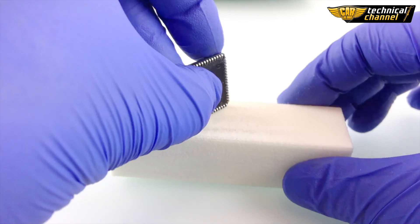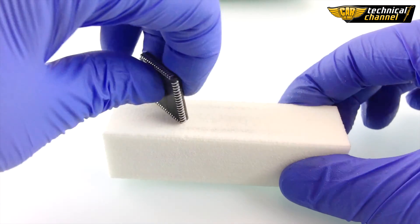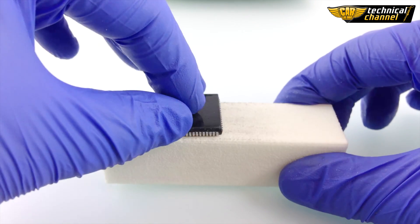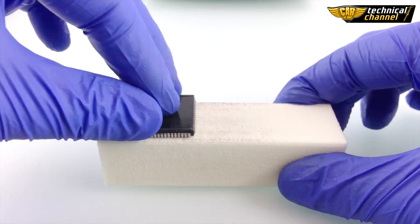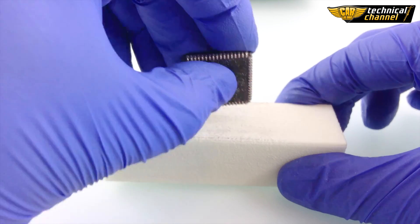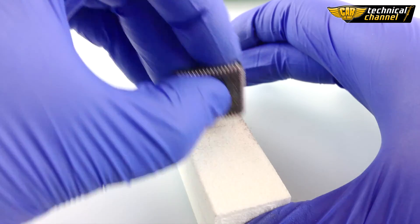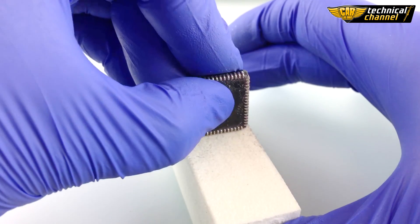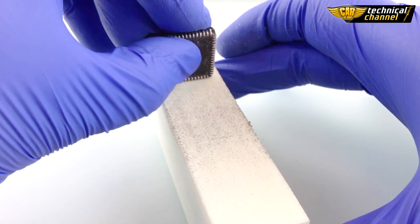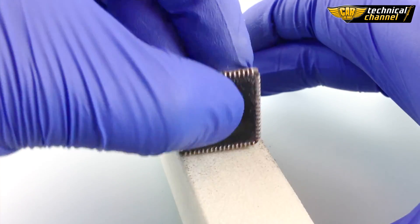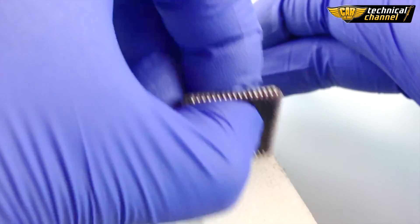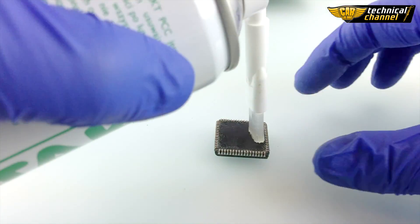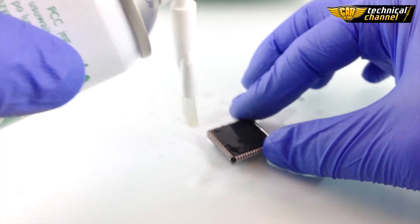Use a polishing block to grind the bases of the legs. Thanks to this, you can avoid problems with programming the processor. Take the excess tin. Clean everything with PCB cleaner and dry with a paper towel.